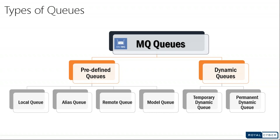We also have an alias queue, which is used when you don't want to expose your queue names to the sending or receiving application. For example, if application A is sending and application B is receiving, and application B doesn't want to expose its queue name to application A, you can create an alias queue where application A connects and puts messages.